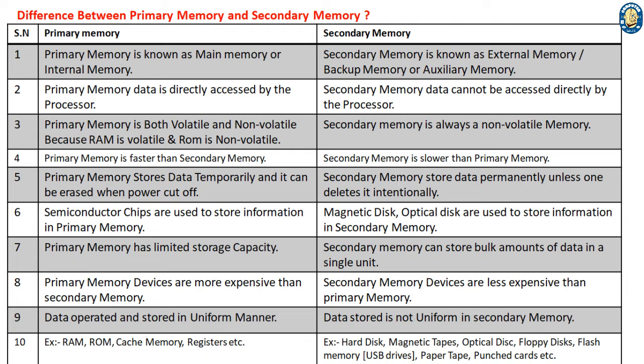4. Primary memory is faster than secondary memory. Secondary memory is slower than primary memory. 5. Primary memory stores data temporarily and it can be erased when power is cut off. Secondary memory stores data permanently unless one deletes it intentionally.